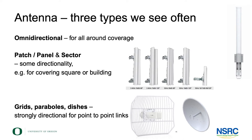Omnidirectional antennas typically look like just a stick — one long element. They emit in all directions around them equally. Looking at the horizontal plane, that's an even distribution to all sides. Seen from the side, however, there is a distinct preferred direction.